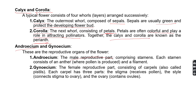Next is the androecium. Androecium is the male reproductive part and it carries the stamen. The stamen consists of the anther and the filament. The anther is basically the pollen-producing part.